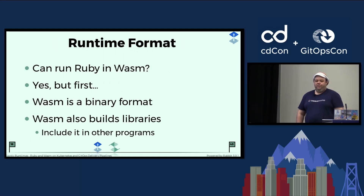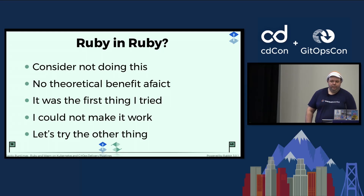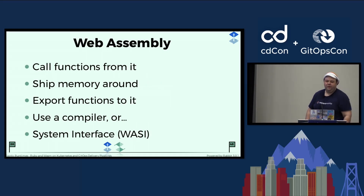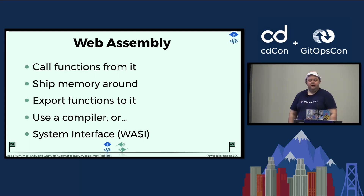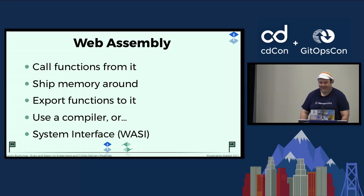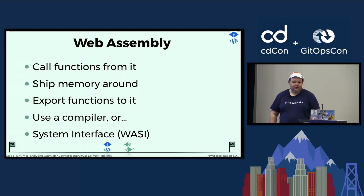So what is WebAssembly? WebAssembly is a runtime format. You can build applications and libraries with it, and you can include them in other programs. I tried running Ruby in WebAssembly in Ruby just to see if it would work — I could not make it work. Wasmr had the best set of examples. With WebAssembly, you can call functions in your WebAssembly library, export functions to it, and ship memory around. There's a thing called the system interface, WASI, which is very helpful and helped me solve a lot of problems when trying to use WebAssembly with Ruby.